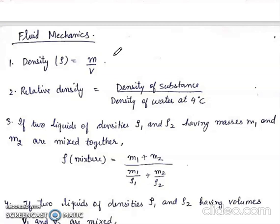First is density. Density rho is equal to mass per unit volume. Rho is equal to m upon v. Relative density is equal to density of substance upon density of water at 4 degree C.